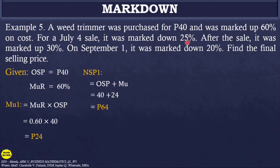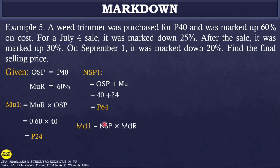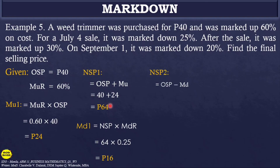Now for the July 4 markdown of 25% from 64 pesos: Markdown 1 = 64 × 0.25 = 16 pesos. New price after markdown: 64 − 16 = 48 pesos. So the price during the July 4 sale was 48 pesos.